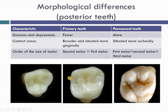The contact areas on either side are much broader in primary teeth and present more occlusally. Also, the deciduous second molar E is bigger than the deciduous first molar B — that is not the case with permanent teeth, where the permanent first molar is the biggest, followed by the second molar and then the third molar.